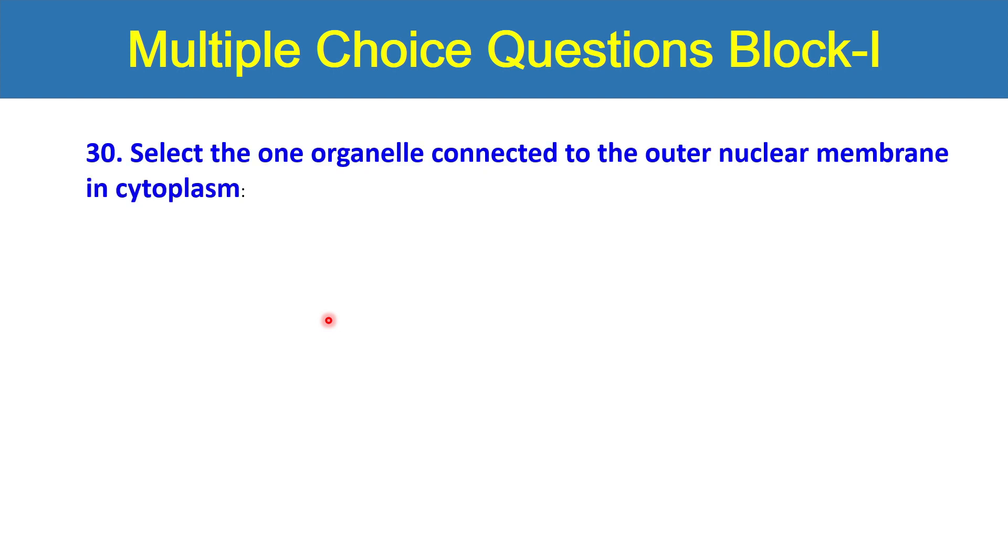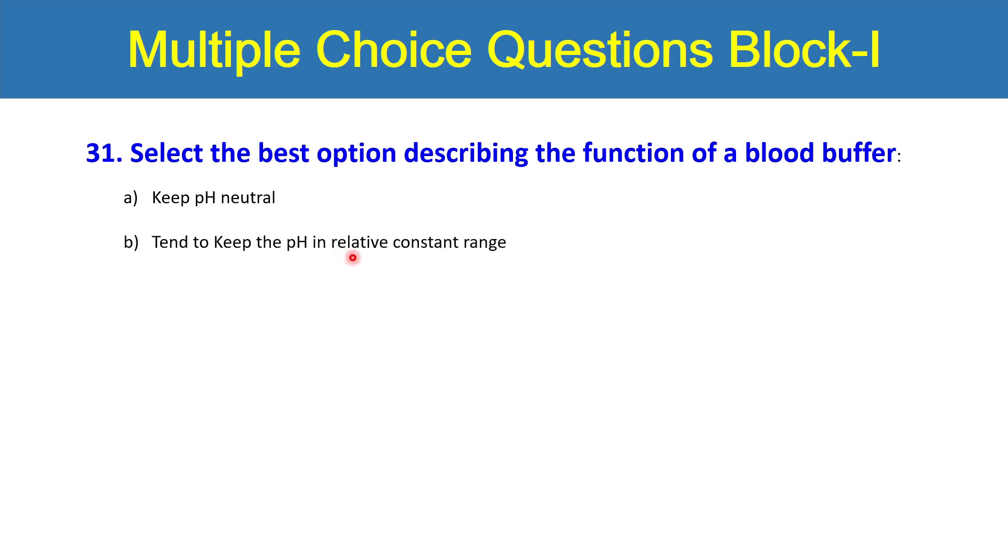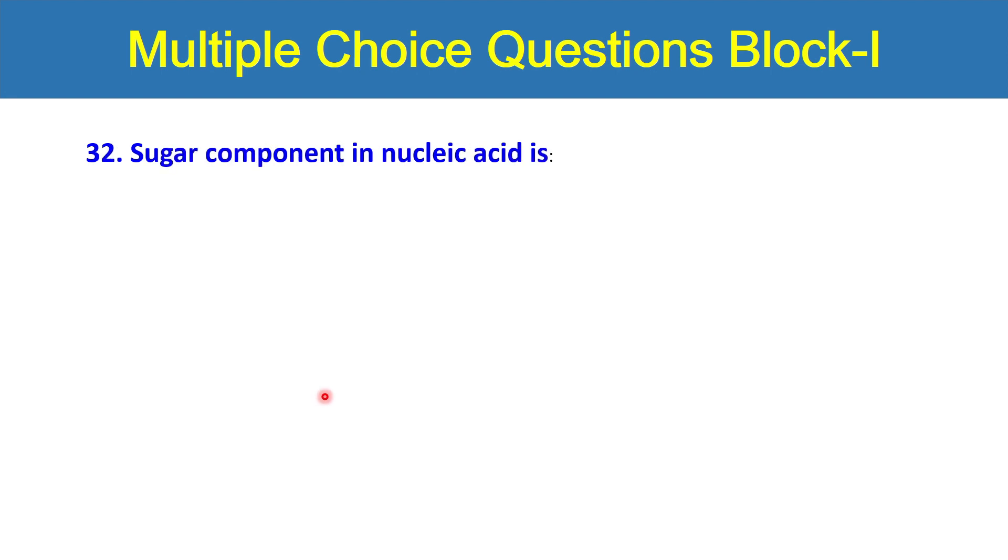Question number 30: select the one organelle connected to the outer nuclear membrane in the cytoplasm. Which organelle is directly connected to the nuclear membrane? Endoplasmic reticulum, lysosomes, mitochondria, peroxisomes, or Golgi apparatus? The last question is select the best option describing the function of blood buffer. Keep the pH neutral? Tend to keep pH in relatively constant range? Increase the pH with addition of a base or decrease the pH with addition of an acid? Or do you think that buffer have no role in maintaining the blood pH? Last question: sugar component in the nucleic acid is mannose, lactose, fructose, glucose or ribose?